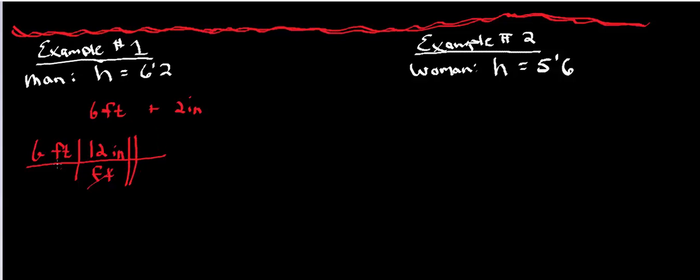So this ultimately amounts to, when the feet cancel, 6 times 12 is actually 72 inches. But we have to add on the 2 inches, which makes this for a total of 74 inches.